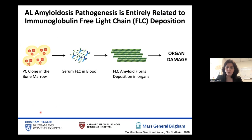The pathogenesis — the reason why these diseases occur — is entirely related to the deposition of immunoglobulin free light chain in the form of amyloid fibrils. Everything starts with an abnormal plasma cell clone in the bone marrow, which is common to other plasma cell disorders. But differently from multiple myeloma, what causes organ damage in AL amyloidosis is not the expansion of the plasma clone, but rather the secretion of a sticky immunoglobulin free light chain that organizes into insoluble fibrils and deposits in target organs, causing organ damage.